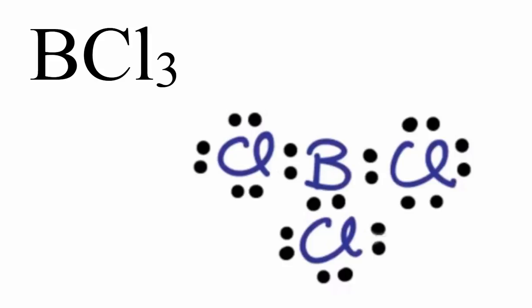Now we need to visualize this in three dimensions. We need to know how those chlorine atoms are going to spread out around that central boron atom. For that, we'll use VSEPR, Valence Shell Electron Pair Repulsion Theory.